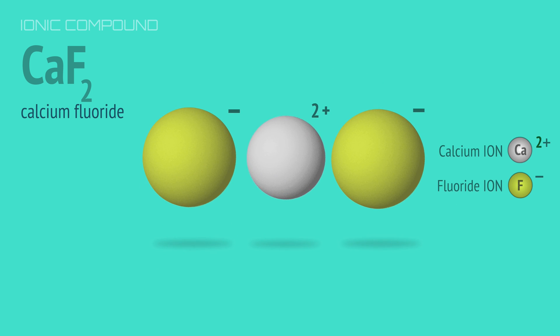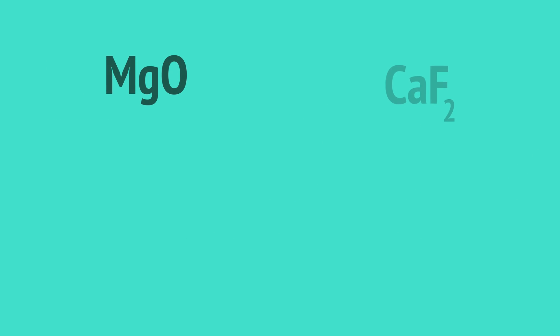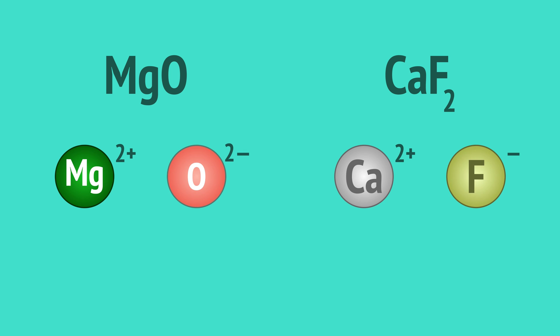That's because a single calcium ion, having a 2 plus charge, attracts two fluoride ions, each with a 1 minus charge. And an ionic compound always has cations and anions in a ratio that gives a neutral charge.